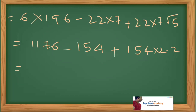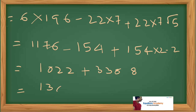This equals 1176 minus 154 equals 1022, plus 154 into 2.2 which is 338.8. So 1022 plus 338.8 equals 1360.8 centimeters squared. Therefore, the surface area of the remaining solid is 1360.8 centimeters squared.